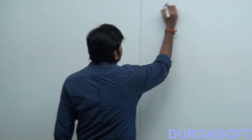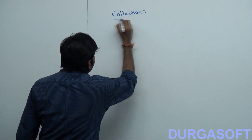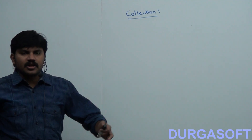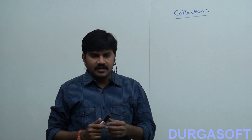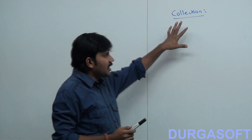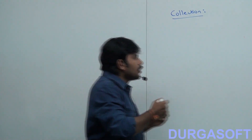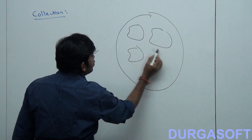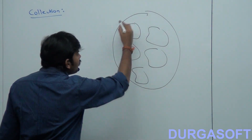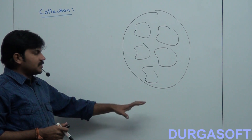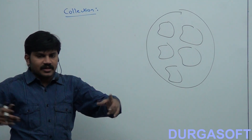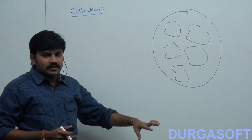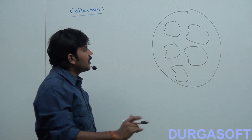Now let me talk about the basic idea: what is a collection and what is a collection framework? If we consider a collection of students, collection of books, collection of markers, collection of pens — what is a collection? A collection is a group of individual objects. It is a group of individual objects represented as a single entity. If you want to represent a group of individual objects as a single entity, then we should go for collection.